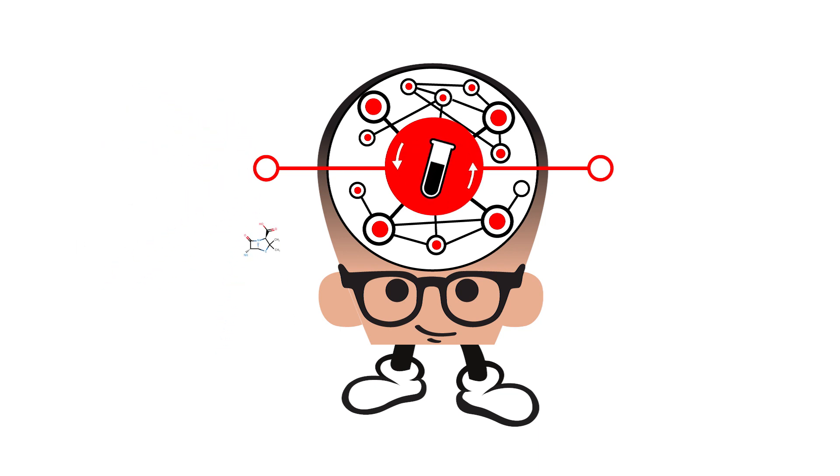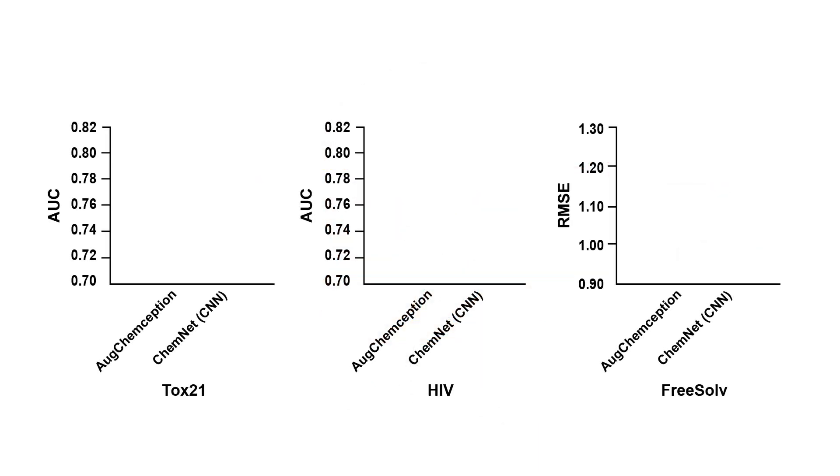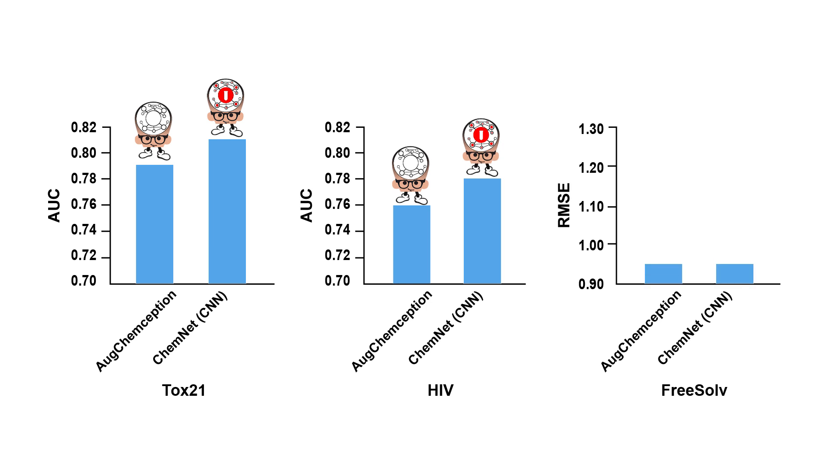Using the Chemception CNN model as the baseline, we fine-tuned ChemNet on several unseen chemical properties. Not only does it outperform in every property tested, we did this without using any additional labeled data or any modification to the neural network architecture.